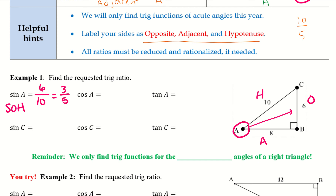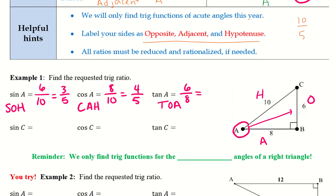Cosine of A is CAH — adjacent over hypotenuse — so I have 8 over 10, which reduces to 4 over 5. And tangent of A is TOA — opposite over adjacent — so I have 6 over 8, which simplifies to 3 over 4.